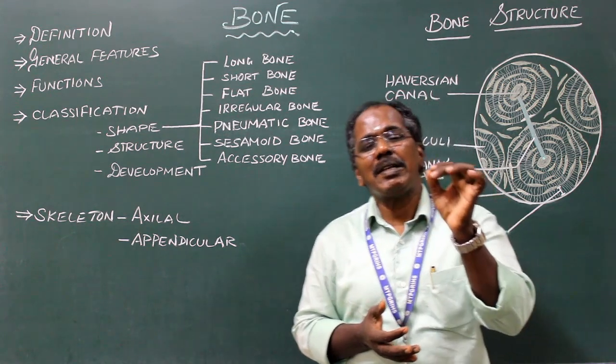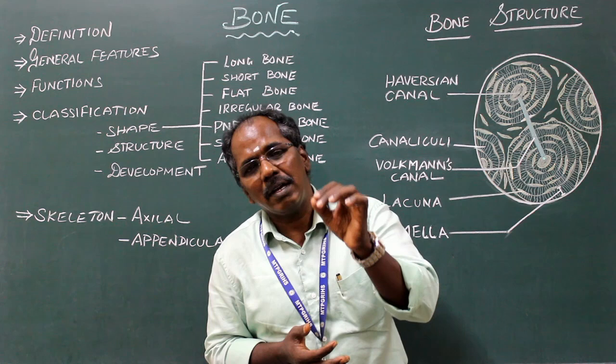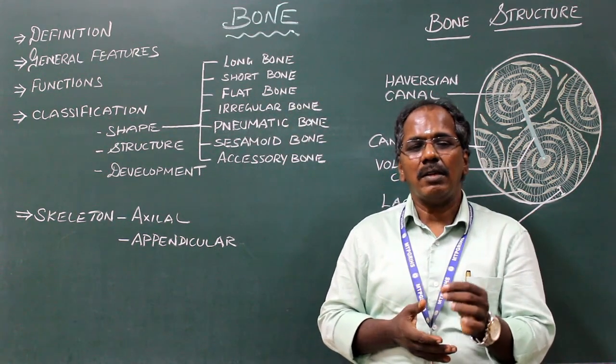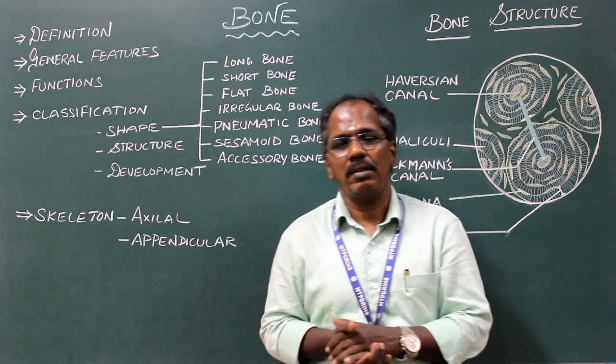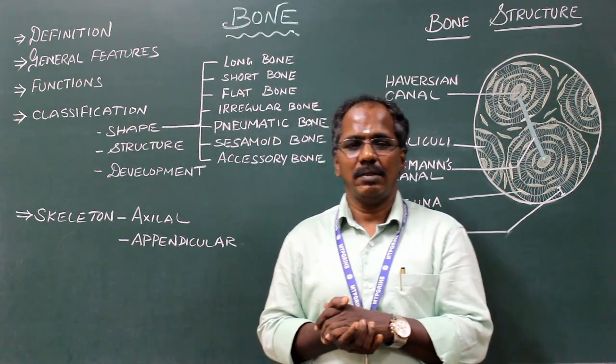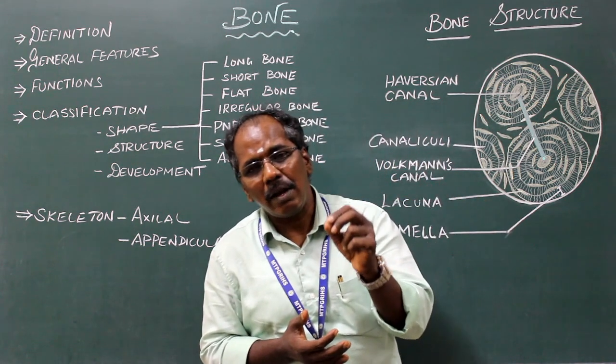Increased secretion of sclerostin inhibits the activity of osteoblasts and stimulates the activity of osteoclasts. Osteoclasts are derived from red bone marrow.